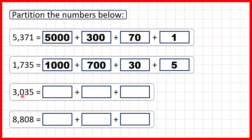Now 3,035. We can see that in our thousands place, we have a 3, so that's 3,000. But now in our hundreds place, we have a 0. When we partition numbers, we don't usually partition zeros, because whatever place value it's in, the value of a 0 is always just 0. Zeros don't have any value in themselves.